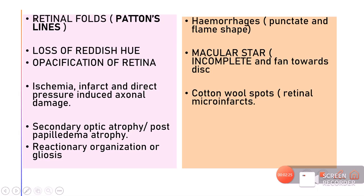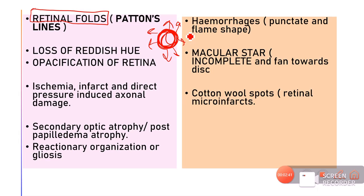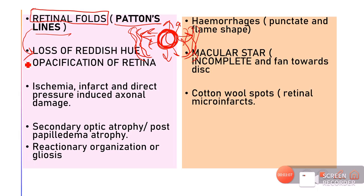As papilledema persists, the edema starts spreading to the surrounding retina, causing folds in the retina. Initially located in the disc itself, the edema spreads through the nerve fiber layer to the retina. When fluid enters beneath a sheet there are folds, so these retinal folds are called Paton's lines.